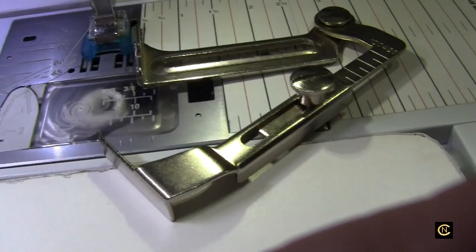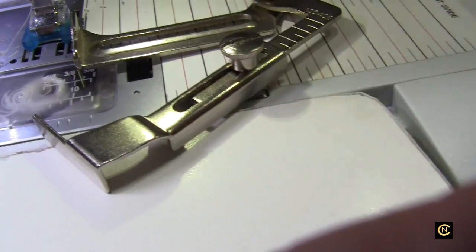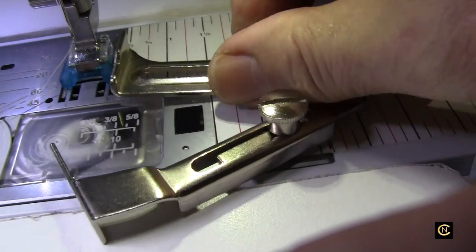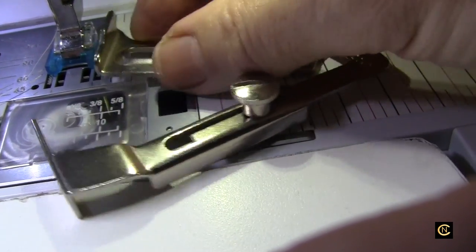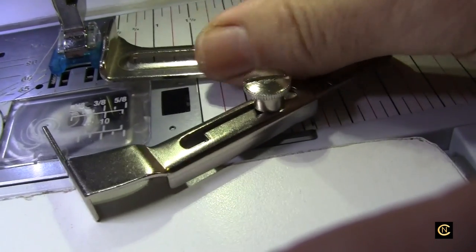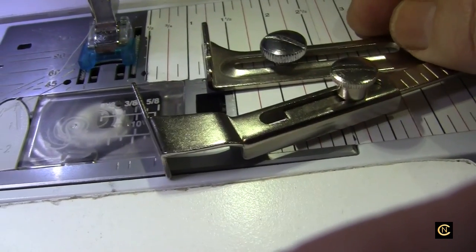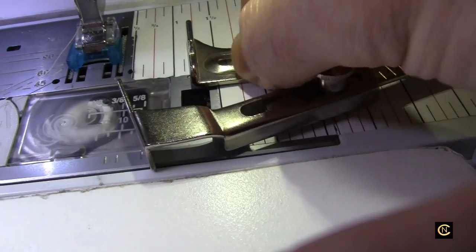This is a homemade video and I'm trying to hold the camera in one hand, so bear with me. You're going to screw that onto the bed of the machine and then set your seam allowance where you want it to be. Tighten this down really good.